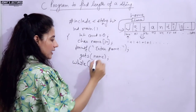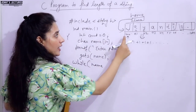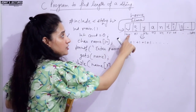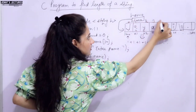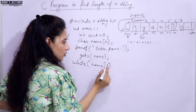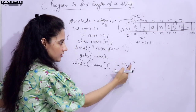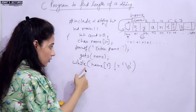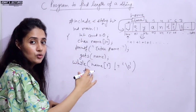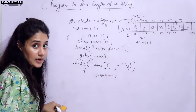Here I am using a while loop. The condition is: while name[i] is not equal to the null character - null is a character so I provide it in single quotes. Till then we do count++ to increase the count, and we also do i++ to move to the next index.